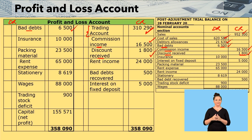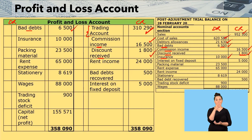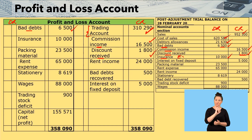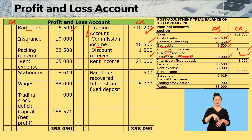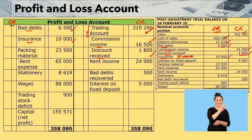The next one is insurance. Where do you think we're going to take insurance in the profit and loss account — on the debit side or the credit side? Insurance is an expense and you can see it on the debit side in the nominal account section. So in the profit and loss account, insurance $10,000 goes on the debit side.